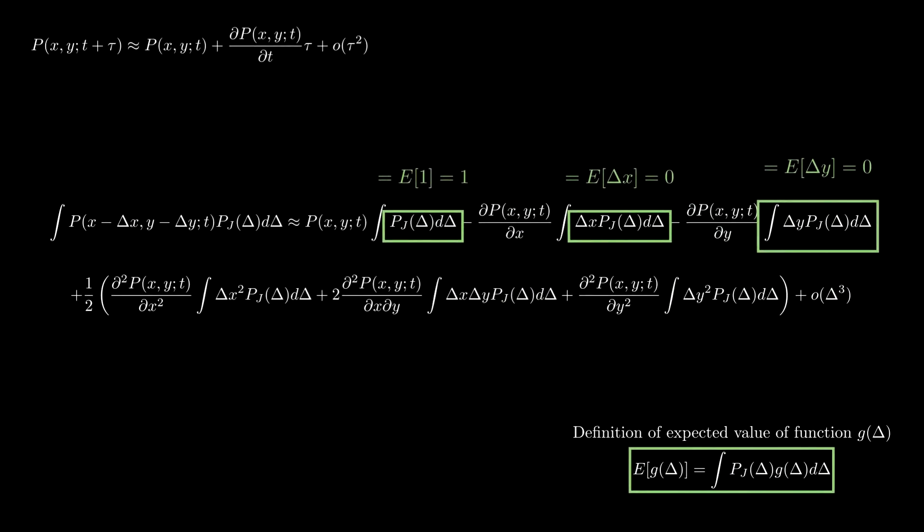Let us get back to our equations now. We can keep applying our definition of expected values to get the standard deviation of the jumps in the direction of x, the correlation between jumps in each dimension, and the standard deviation of jumps in the direction of y.